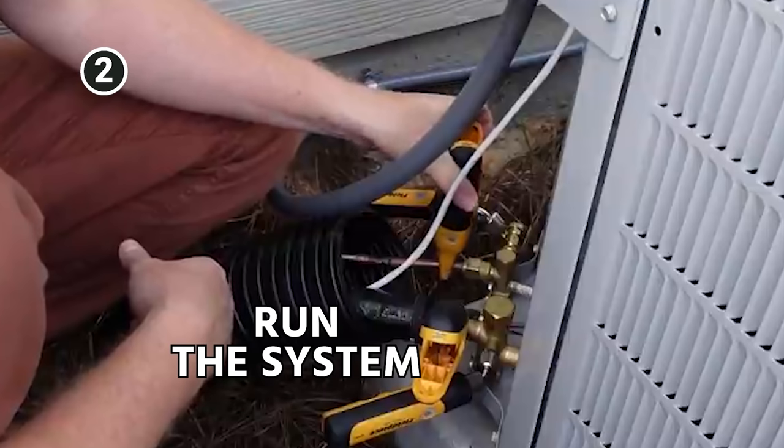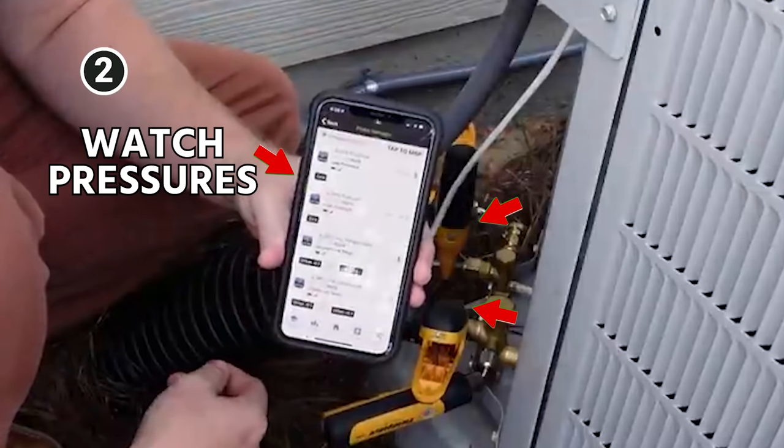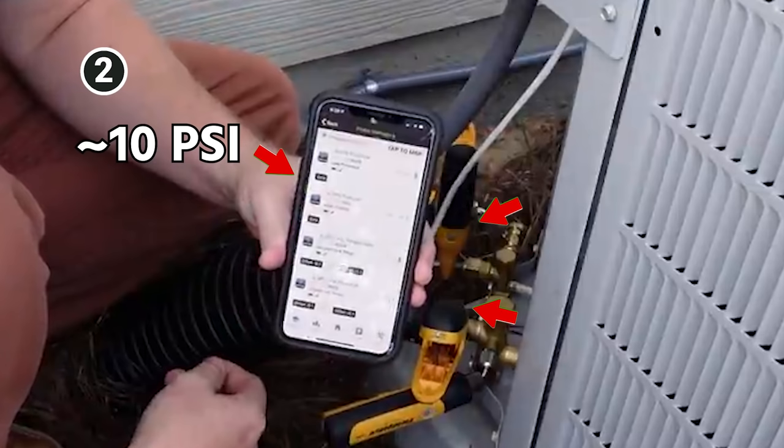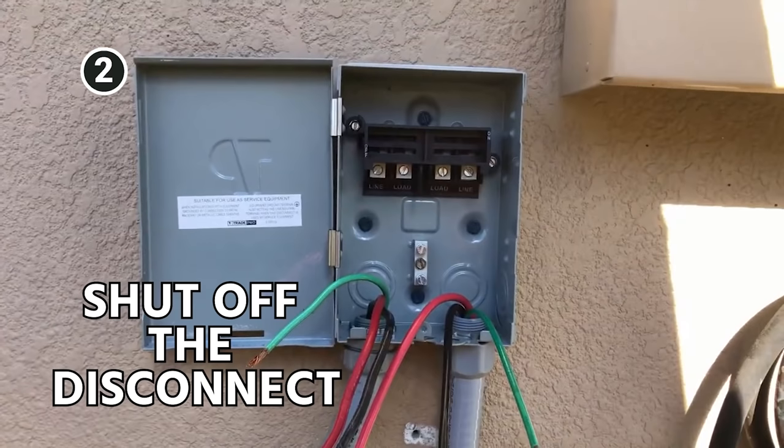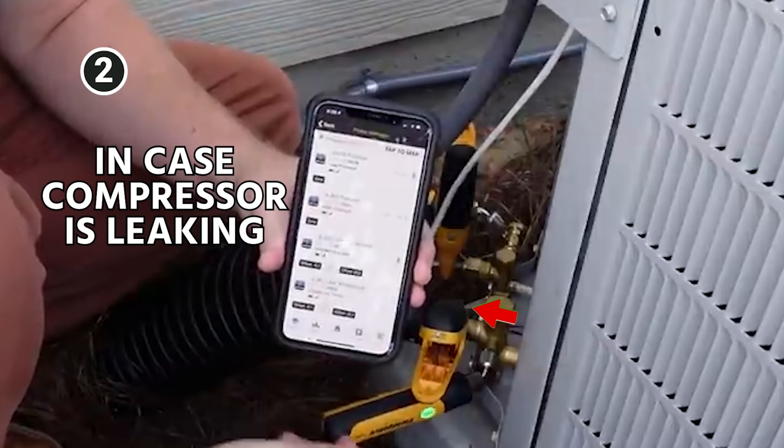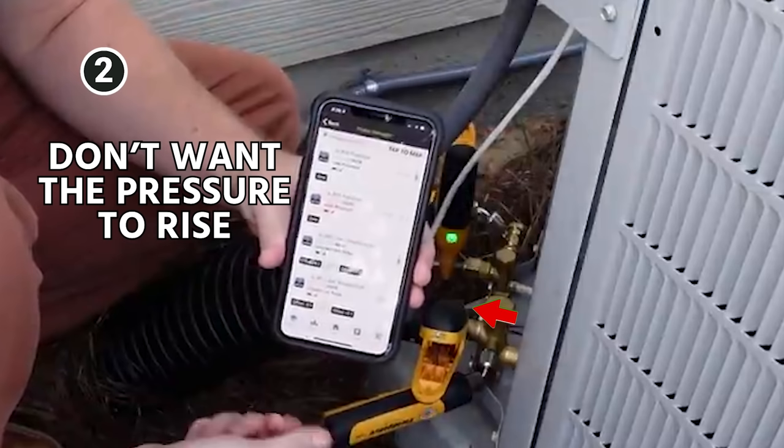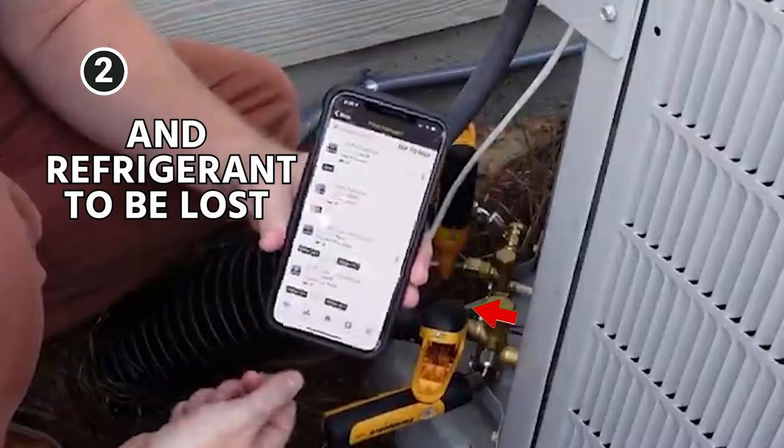You're going to run the system and watch your pressures on both your suction and your liquid side. They're going to drop generally pretty quickly, often about 10 PSI. That's when you want to go ahead and shut off the disconnect and then also shut down the suction valve at the same time, just in case your compressor is leaking a little bit through the valves. You don't want that pressure to rise and that refrigerant to be lost.